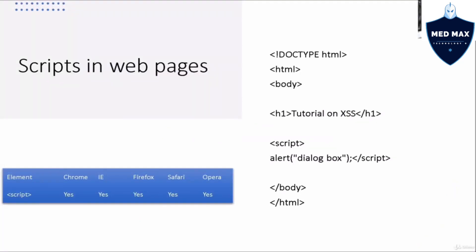We have a standard, very simple way of building an HTML document that can be served through a web application server — for example, Apache, which you've seen a lot in the tutorials. On the right side, we can see the HTML opening, the body, the h1 heading tag, and we got the script tag, which of course is JavaScript.